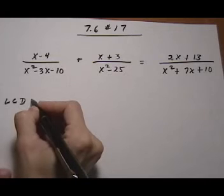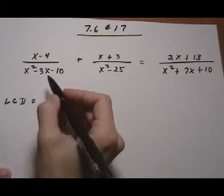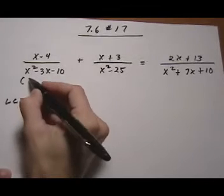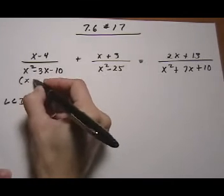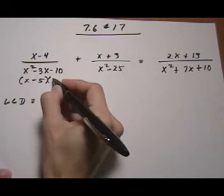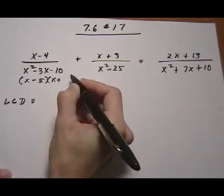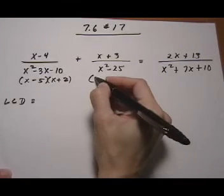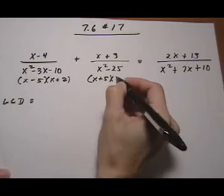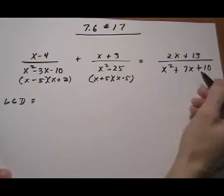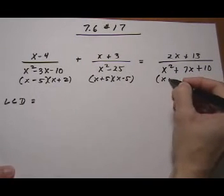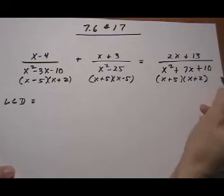In order to find it we need to first factor the denominators. So the first expression factors out as x minus 5 and x plus 2. The second one, difference of squares, x plus 5 x minus 5. And the third one, trinomial factoring like the first one, x plus 5 x plus 2. So those are the factored denominators.